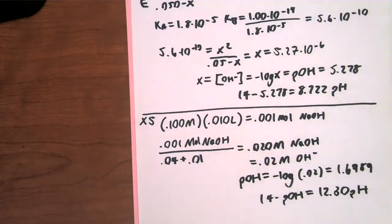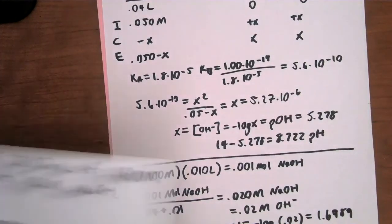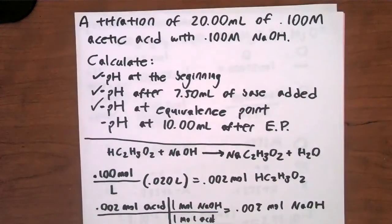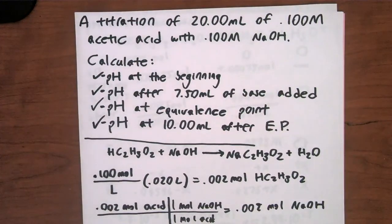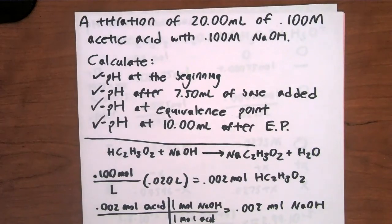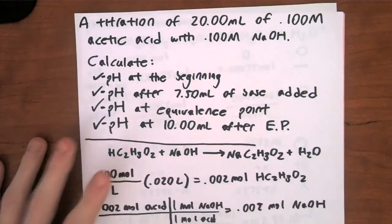That is a beast of a problem — four pages of work. Please do a lot of titration problems; the more you do, the easier Unit 4 will get. Everything builds on this until we get to entropy and enthalpy. If you can solve all four parts by yourself, great. The best way to learn is to do these videos side by side — pause, work through it, then play again.